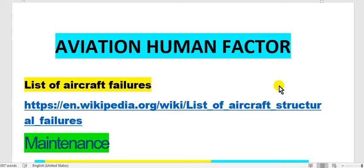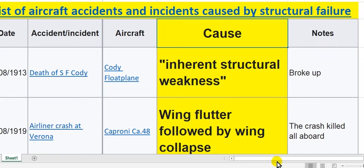What is the human factor in aviation? If we make a tour or scan about aviation accidents during history — you can go to Wikipedia — I will show you. If you go to this and click it will open this page.